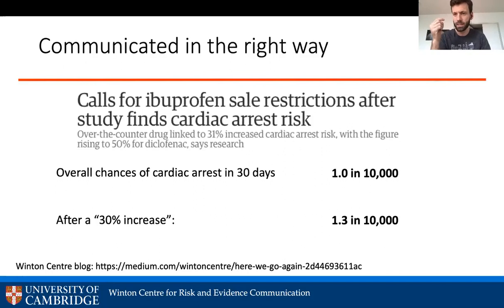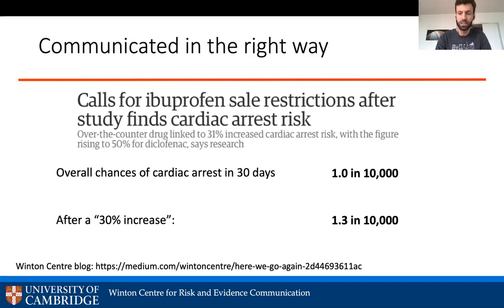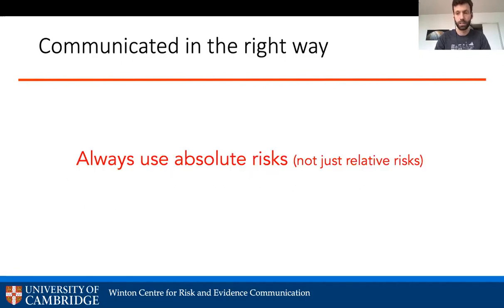Telling people '1.3 in 10,000' produces a very different risk perception than just reporting the relative risk. Newspapers get this wrong partly because simplicity is its own goal — just report the relative risk and keep things clean — and partly because '1.3 in 10,000' is less engaging than '31% increased risk.' But the absolute risk accurately represents what people need to understand to make decisions about their own behaviors or to think about government policy. We strongly recommend always using absolute risks, not just relative risks.